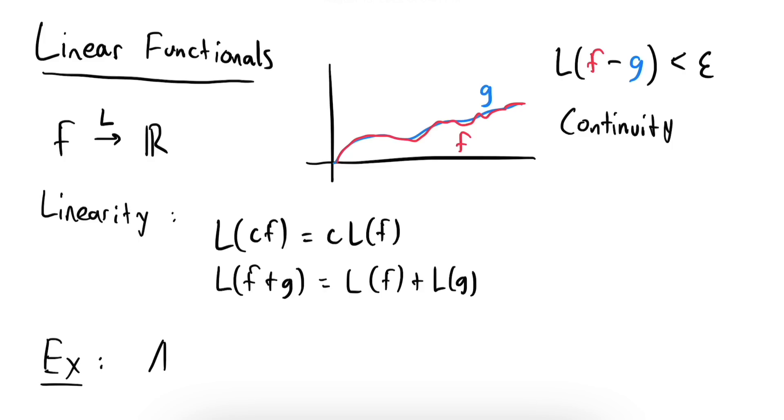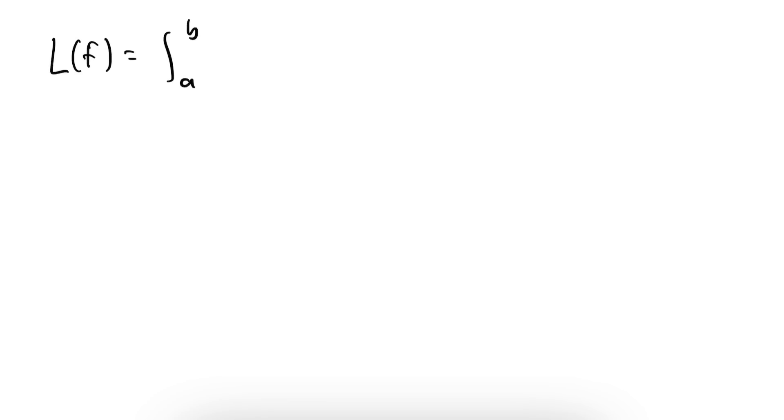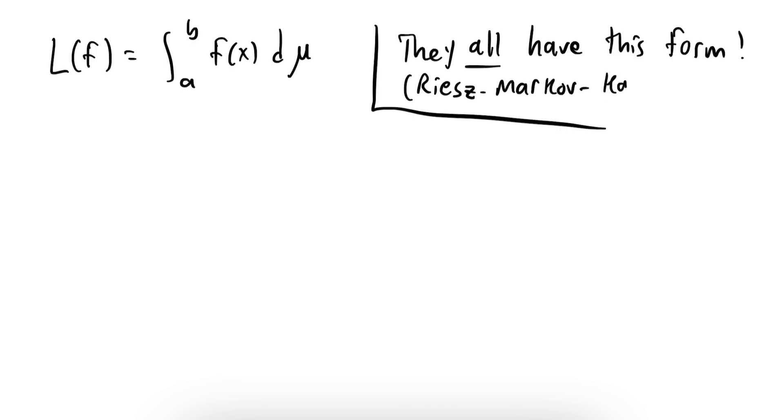For example, taking the average value of a function is a linear functional, since integrals are linear, and two close functions will have close averages. Now, the surprising fact is that integration with respect to any measure also defines a linear functional. To get even more surprising, the converse of this statement is also true, namely, we can represent any linear functional on the space of continuous functions via integration with respect to some measure. This is a rather deep fact called the Riesz-Markov-Kakutani theorem, but unfortunately this is a bit beyond the scope of this video.